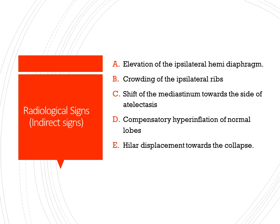Indirect signs include elevation of the ipsilateral hemidiaphragm, crowding of the ipsilateral ribs, shift of mediastinum towards the side of atelectasis, compensatory hyperinflation of normal lobes, and hilar displacement towards the collapse.